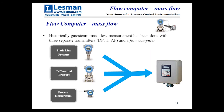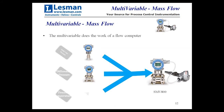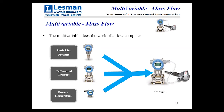Here's the historic form of the flow computer. You have three separate transmitters — static line pressure, differential, and process temperature — and you take all three of those signals into a box, it does the calculation, and you get a mass flow out. With a multi-variable transmitter, you now have a single unit that does the same thing as all three of these individual devices. It's one unit doing all of that right there in the process, instead of the separate flow computer.